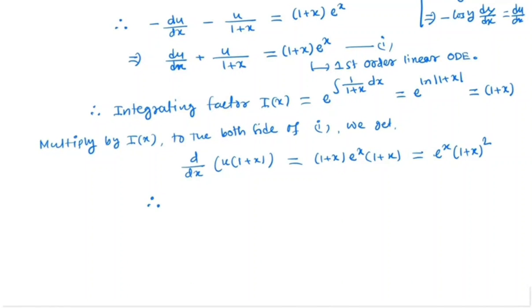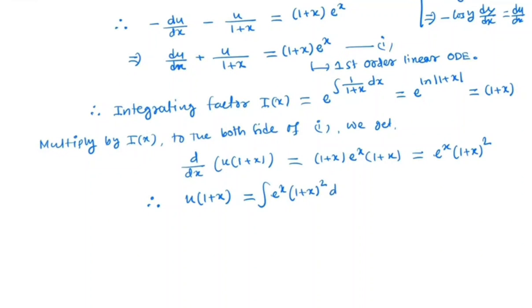So by integrating we get u times (1+x) equals the integral of e^x (1+x)^2 dx. So again we will solve this integral by integration by parts.